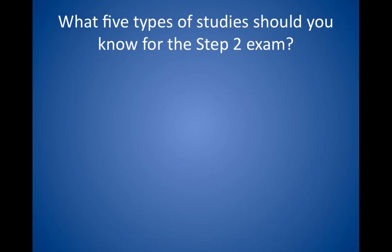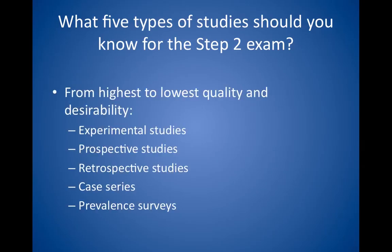What five types of studies should you know for the USMLE Step 2 exam, from highest to lowest quality and desirability? 1. Experimental studies. 2. Prospective studies. 3. Retrospective studies. 4. Case series. 5. Prevalence surveys.